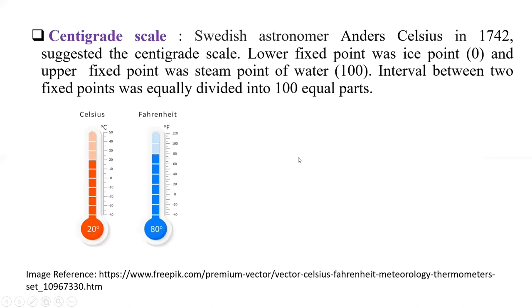Now, in 1742, Celsius suggested this scale. Lower fixed point was ice point, zero. And upper fixed point was steam point of water, 100 degrees Celsius. Now the interval between these two fixed points was equally divided into 100 equal parts.